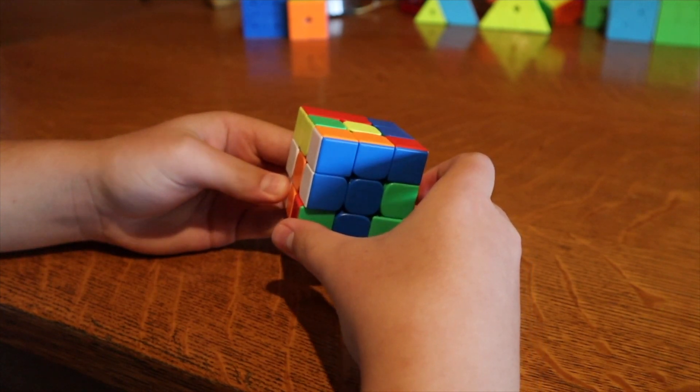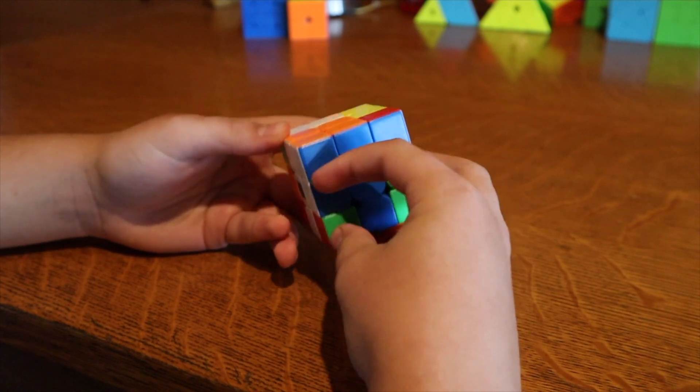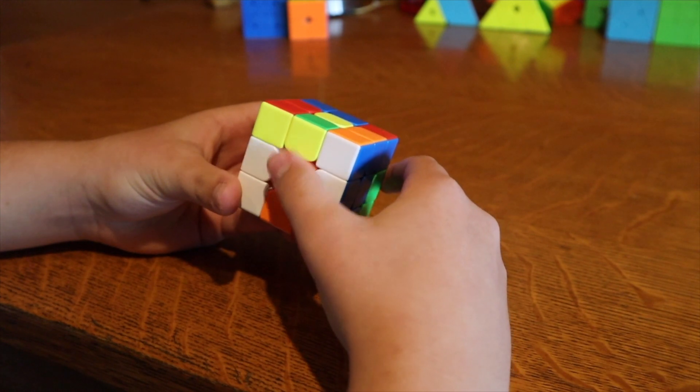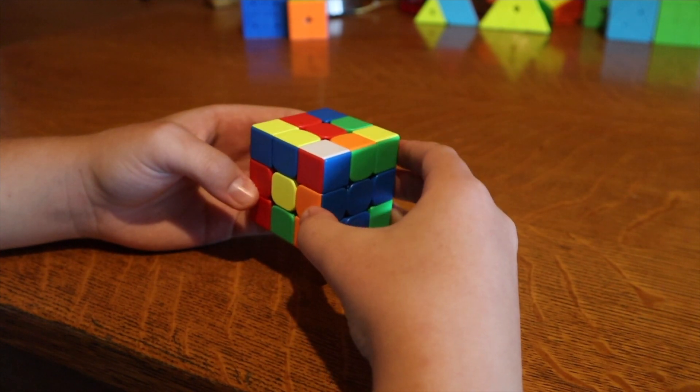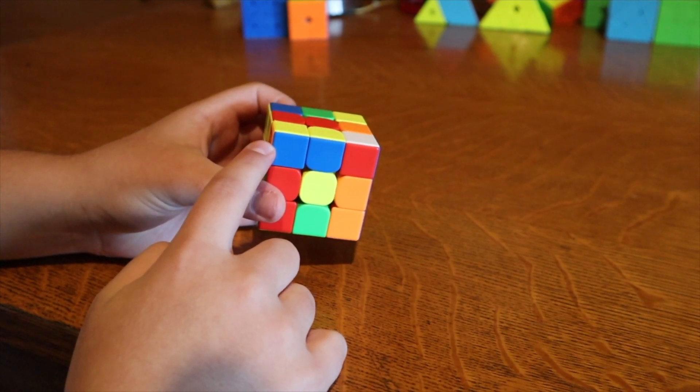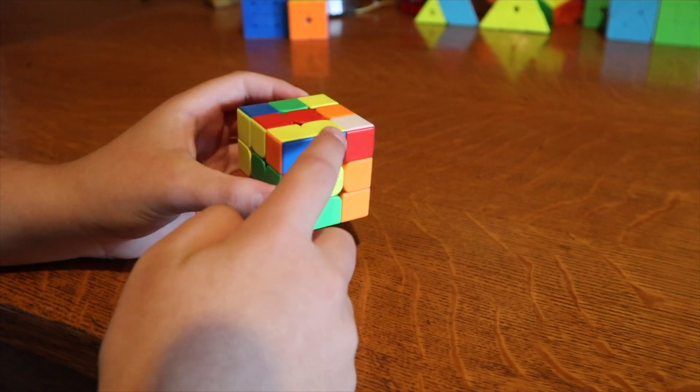Then I continued inspecting this scramble and I couldn't really find what I would do after this x-cross for white, but I did see something else. If you put orange on the bottom as if you're going to do orange cross, then you see we have this nice F2L pair right here. It's the orange, blue, and yellow F2L pair.